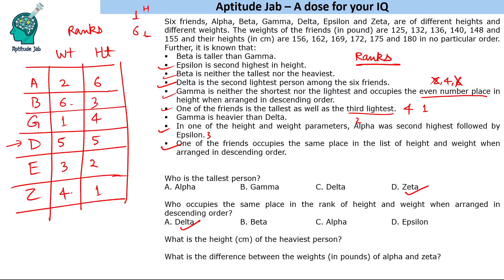Question 3: What is the height in centimeters of the heaviest person? The heaviest person is Gamma, who has the fourth highest height — rank 4 corresponds to 169 centimeters. Question 4: What is the difference between the weights of Alpha and Zeta? Alpha is rank 2 in weight at 148 pounds and Zeta is rank 4 in weight at 136 pounds. So 148 minus 136 equals 12 pounds.